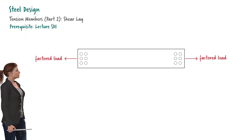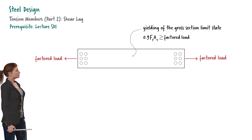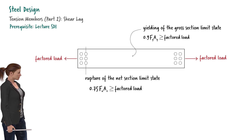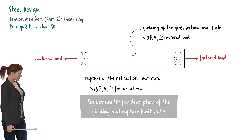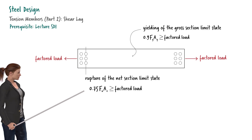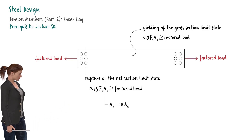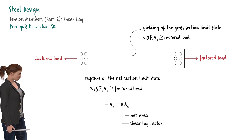In the previous lecture, we introduced two limit states for the design of tension members: yielding of the gross section and rupture of the net section. See Lecture SD1 for a description of these limit states. In the rupture expression, A_e is defined in terms of A_n and U, where A_n is the net cross-sectional area of the member at the connection, and U is called the shear lag factor.